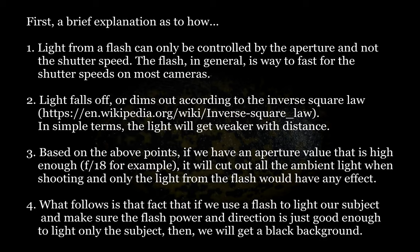The second thing to know is that light falls off or dims as the distance from the light source increases. This follows what is commonly known as the inverse square law — in simple terms, the light will get weaker with distance. Based on these points, if we have an aperture value that is high enough, let's say F18 or F22, it will cut out all the ambient light in the room. Therefore, anything lighted by the flash is the only thing that will show up in the image frame. If we use a flash to light a subject and make sure the flash power and direction is just good enough to light the subject, then we will get a black background.